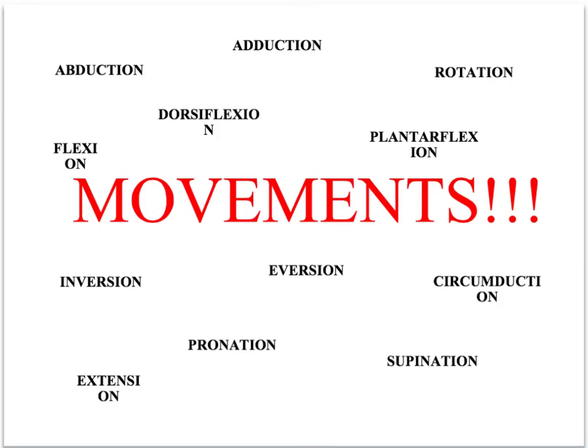All synovial joints allow certain combinations of movements. For example, at the elbow there is a very limited type of movement that can be produced — it can only go backwards and forwards. Whereas the shoulder joint can produce a wide range of movement with rotation.